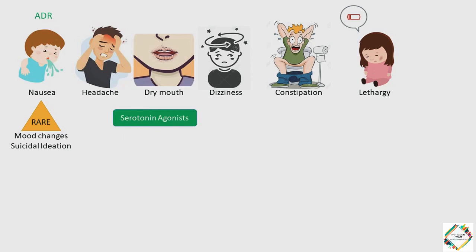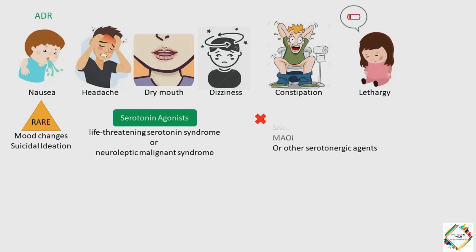The development of life-threatening serotonin syndrome or neuroleptic malignant syndrome has been reported with the use of this drug. Therefore, patients on Lorcaserin should be monitored for the emergence of these conditions. The concomitant use of Lorcaserin with SSRIs, SNRIs, MAO inhibitors, or other serotonin drugs should be avoided because of the increased risk of serotonin syndrome.